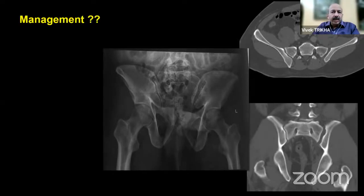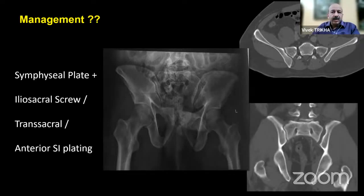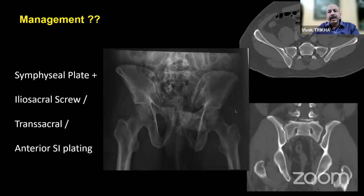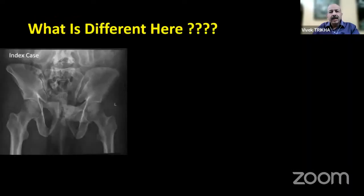What is the management? Management usually involves a symphysial plate for the symphyseal disruption. Based on preferences, one can put in an iliosacral screw, trans-sacral trans-iliac screws, or anterior SI joint plating, which are the most common methodologies for an APC 2 or 3 injury. But if it were that simple, this case wouldn't be presented here. So what is different?